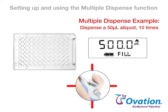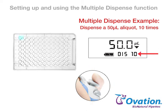Aspirate sample by pressing and releasing the pipetting trigger. The total volume required to complete all dispenses is displayed while the volume is being aspirated. Now press and release the pipetting trigger to dispense each aliquot. The display will indicate the volume being dispensed and the number of dispenses remaining.